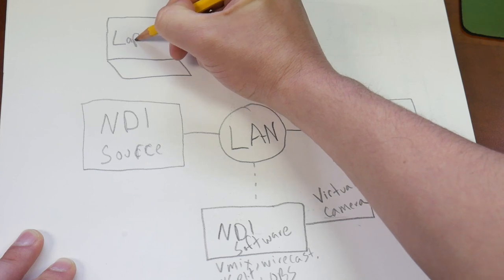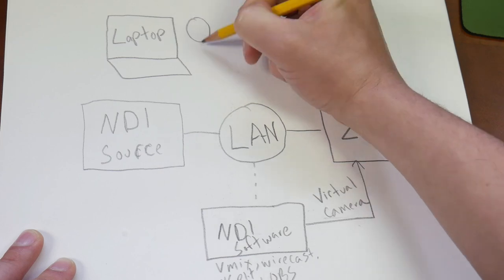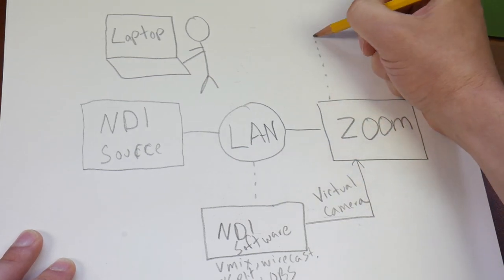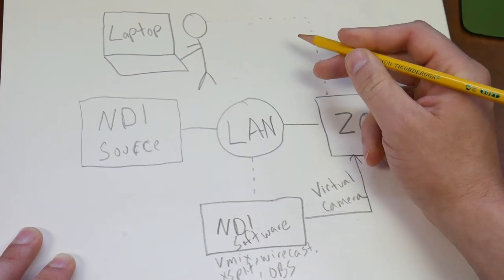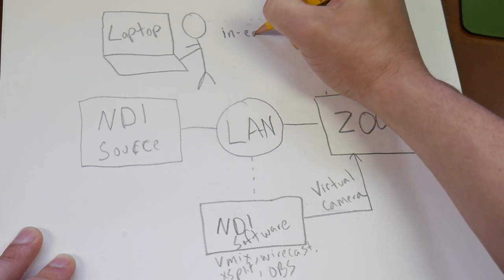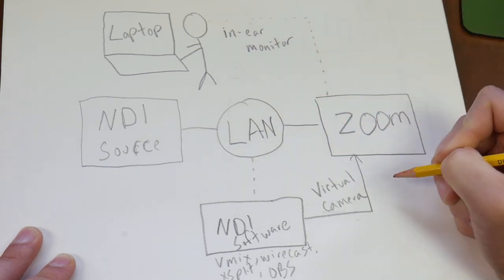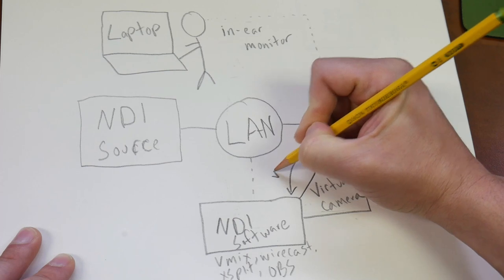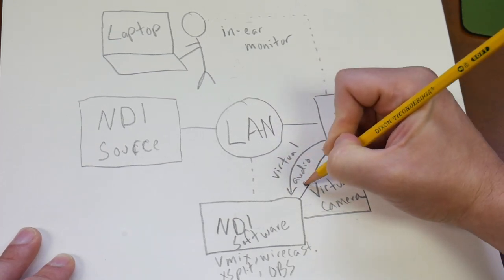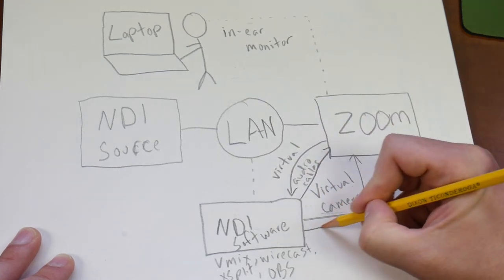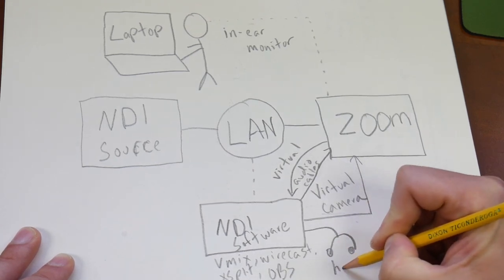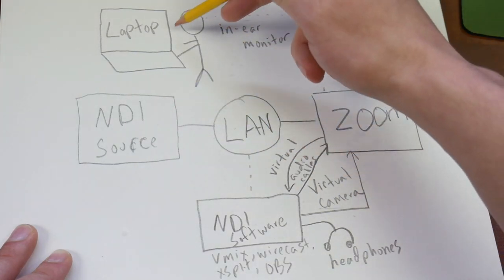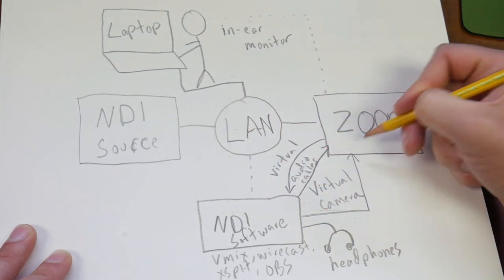We're also going to talk about audio. In this presentation, we'll show how to bring a laptop into your video production software that's already feeding into Zoom. I either need to hear audio directly out of Zoom into my in-ear monitor, or we can use virtual audio cables so I hear Zoom audio directly in the video production software — which we prefer because it allows high-definition recording of our Zoom sessions. We have some really great videos on that.